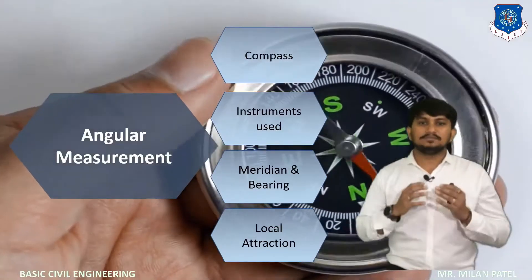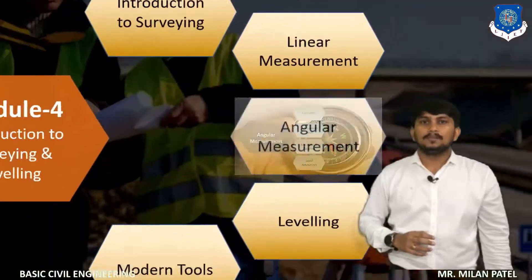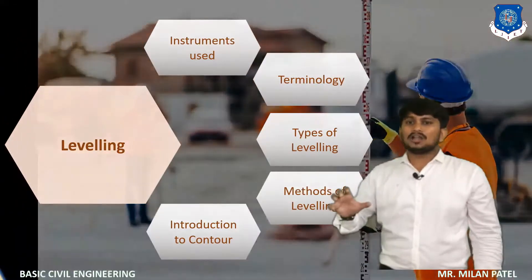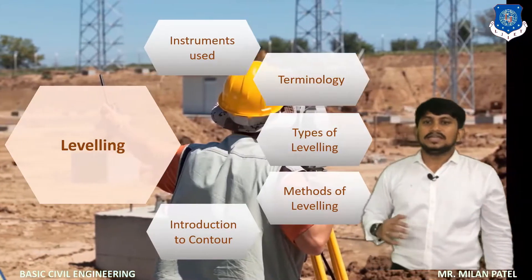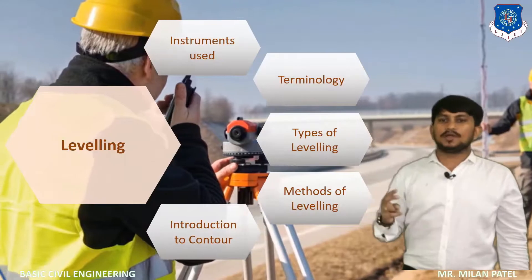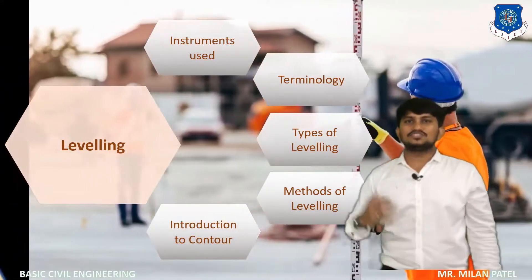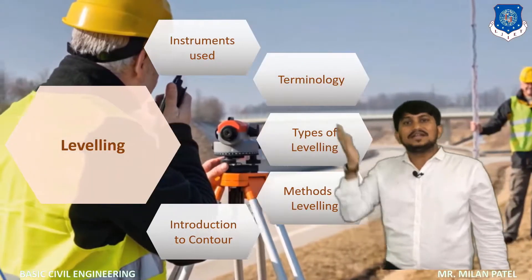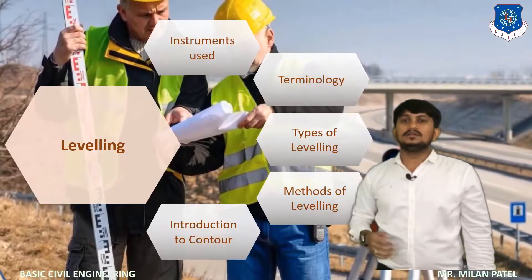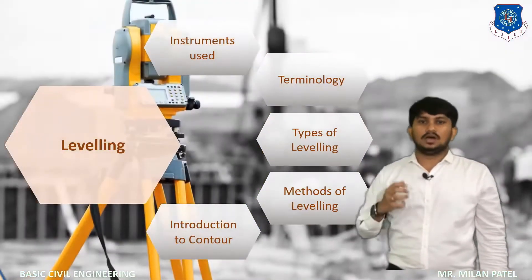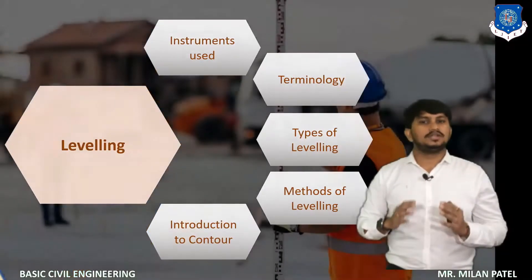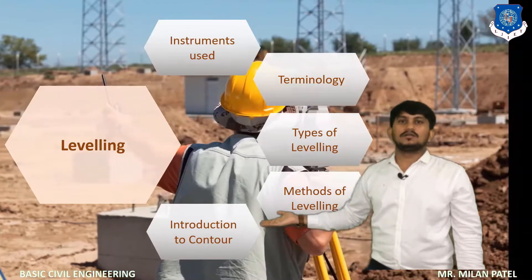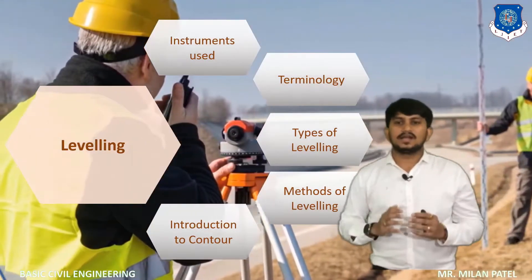We will also do a practical on how a compass can be used in angular measurement. Moving further, the next topic is levelling — determining the relative heights of different points. Here we have to identify the level difference between two points to know the slope, using instruments like the dumpy level. We will discuss different types of levelling and carry out actual fieldwork. Last but not least, we will discuss the introduction to contour, which helps to find the best possible routes for road-based projects.